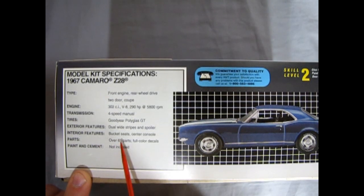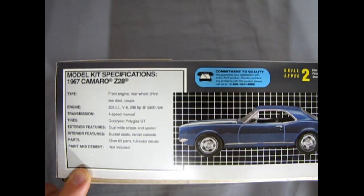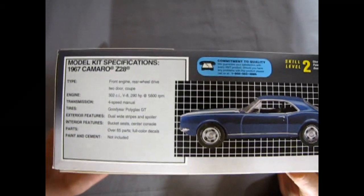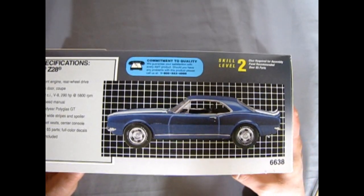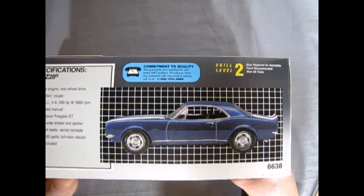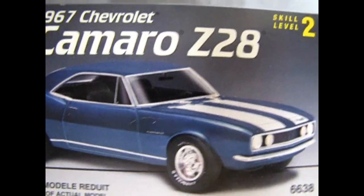The exterior features duo wide stripes and spoiler. Interior features bucket seats, center console, over 65 parts, full color decals and paint and cement not included. This is an interesting thing too which we'll get into. Anyway, there's a nice picture, a side view of our Camaro.